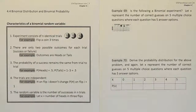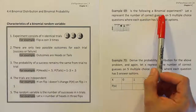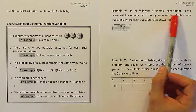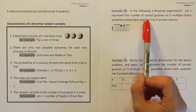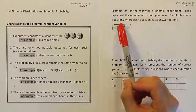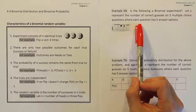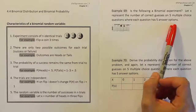Example 69 and 70. Let's look at example 69. It says: is the following a binomial experiment? Let x represent the number of correct guesses on five multiple choice questions where each question has five answer options.